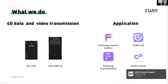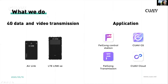We also make CUAV CLOUD with 4G data and video transmission — the A-Ring and LTE-Ring SE. The difference is that the A-Ring only sends data, while the LTE-Ring SE integrates both data and video together. We also offer vehicle control station applications, CUAV JS, and vehicle transmission via CUAV CLOUD, so users can control the drone anytime and anywhere.